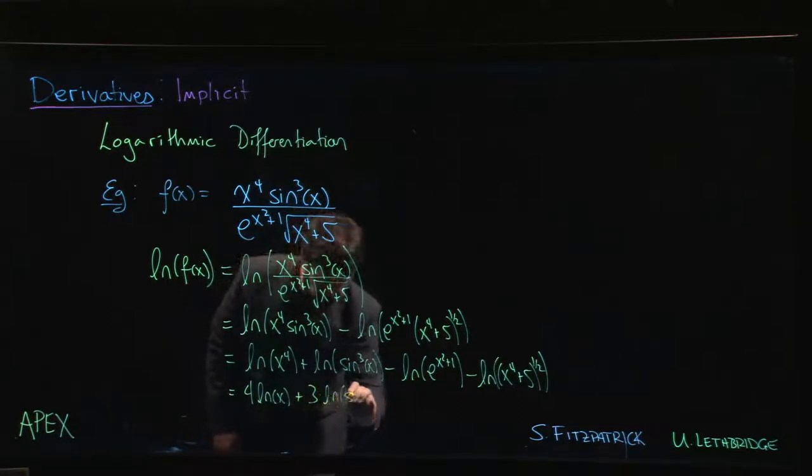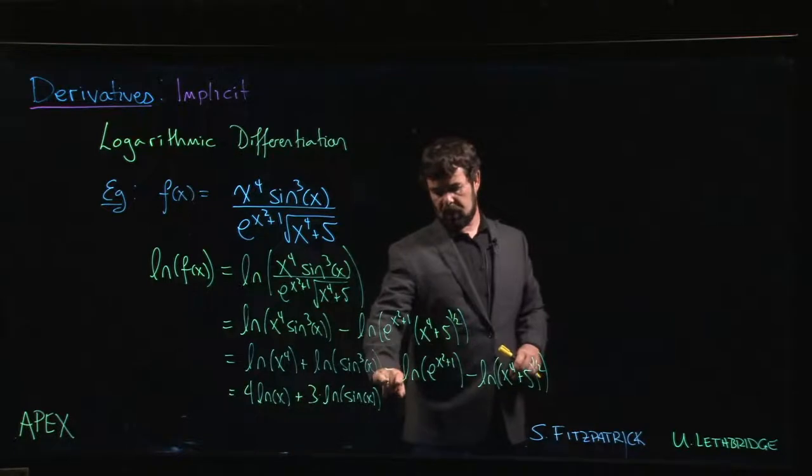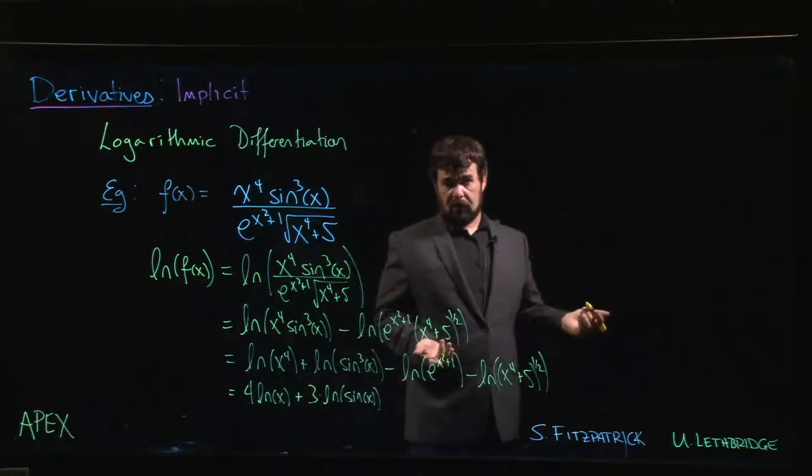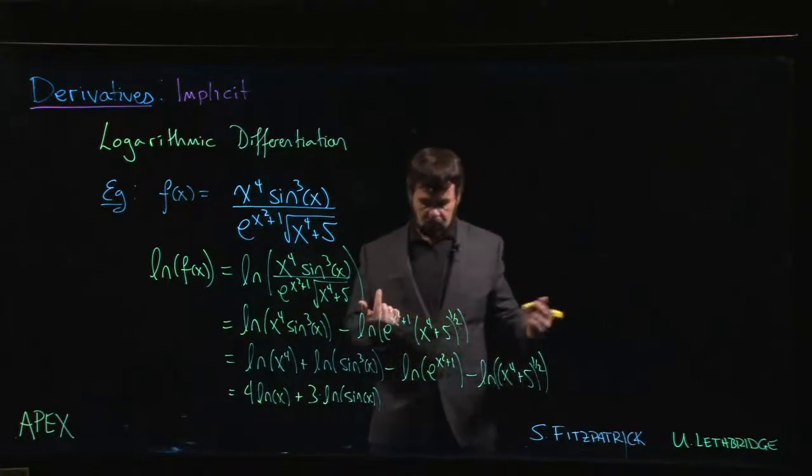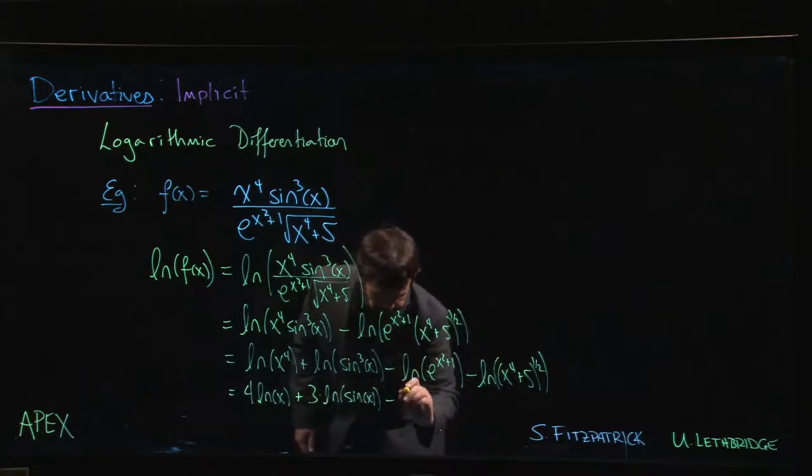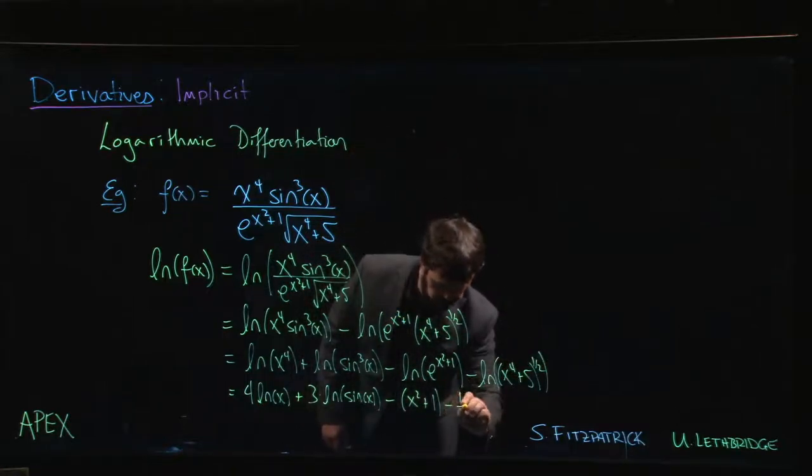Times the natural log of sine x. This one here—you can either think of bringing that x squared plus one down in front, natural log of e is just one, or remember that the natural log and the exponential function are inverses of each other, so they cancel out and give you whatever is left, which is x squared plus one in this case. And finally here, bring down that one half.